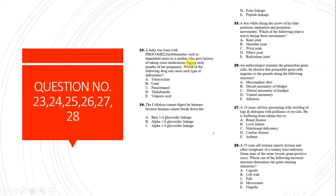Question 23: A baby was born with phocomelia. The mother gave a history of taking medication during early months of pregnancy. Which drug can cause such deformities? The answer is thalidomide. Thalidomide is a drug used in pregnant women to relieve morning sickness but is a major teratogenic drug that can cause teratogenesis.